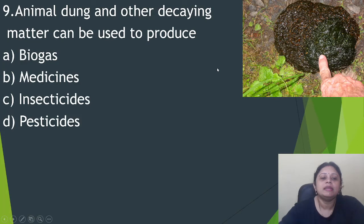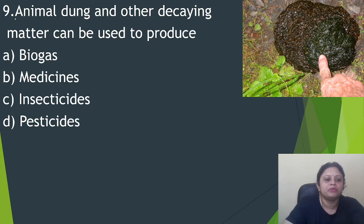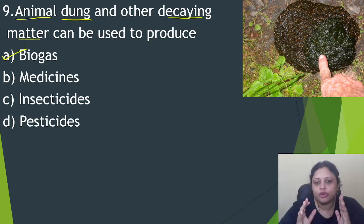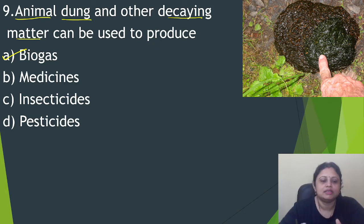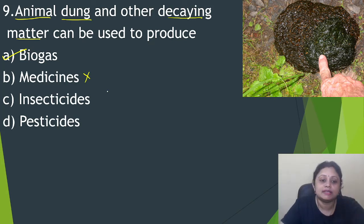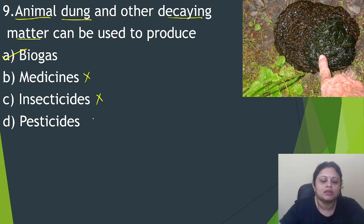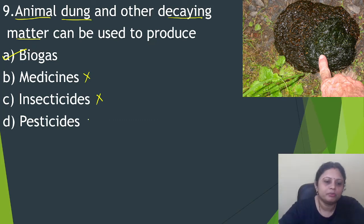Next question: animal dung and other decaying matter can be used to produce? Option A, biogas. B, medicine. C, insecticides. D, pesticides. Animal dung and other decaying matter can be used to produce biogas. From these substances, a gas is produced which we call biogas, and we can use it in our kitchen. Insecticides are substances used to kill insects, and pesticides are substances used to kill pests like mice and rodents — so those are not the answers. The correct answer is option A, that is biogas.